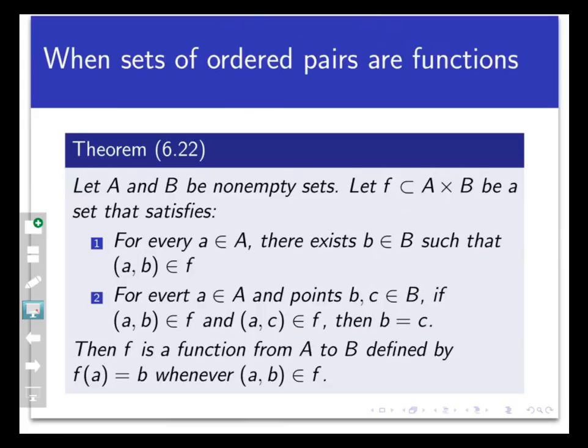Now, that's a lot of verbiage. What does this all mean? Well, the first property here is just saying that every point in the domain maps to something. So we definitely want that to happen if this is going to be a function. Every time I encounter an a in the set A, there is some corresponding b in the set B that is related to it.